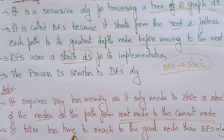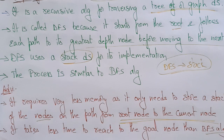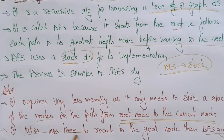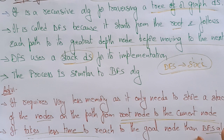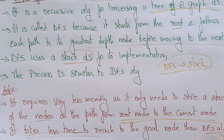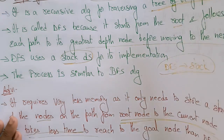DFS also takes less time to reach the goal node than BFS. Whereas in BFS, both space and time complexity are more, in depth first search it takes less time.